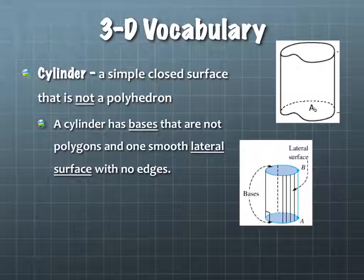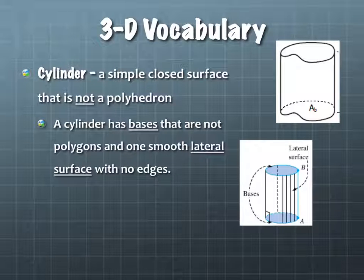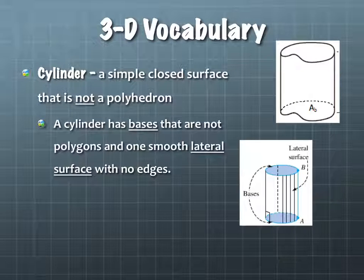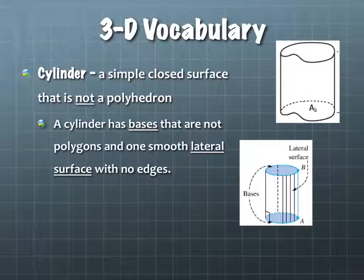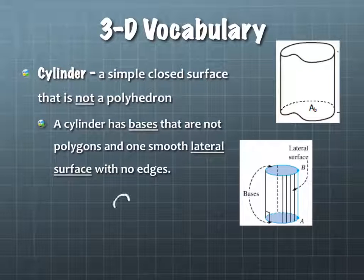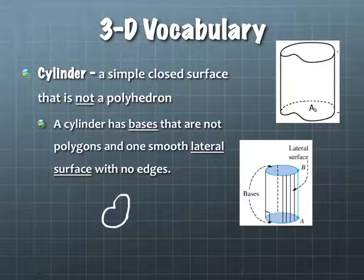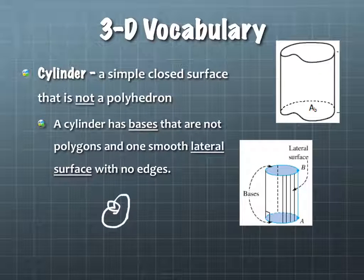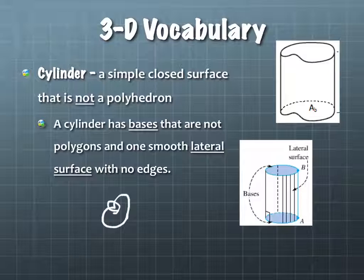Every time you think of a cylinder, you're probably thinking of a circular cylinder, but there's no need for them to be circles on top and bottom. Since it's near Valentine's Day, you could almost make a heart shape on the top and bottom — you'd just have to be careful with the point so you don't get an edge. You could create that and make a cylinder out of it. The bases have to be exactly the same shape — congruent.